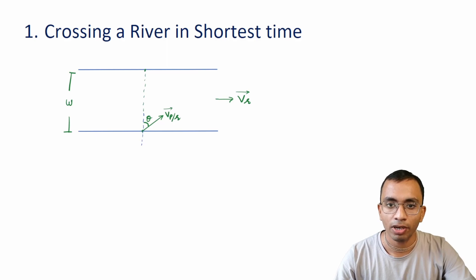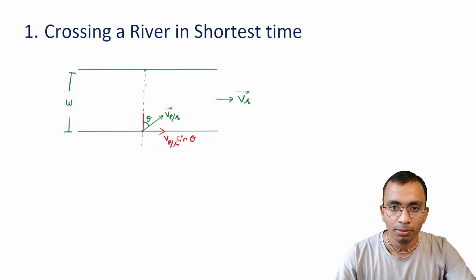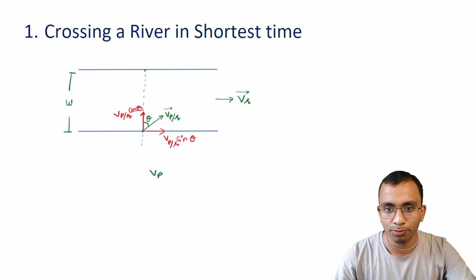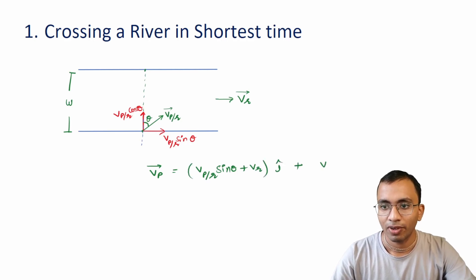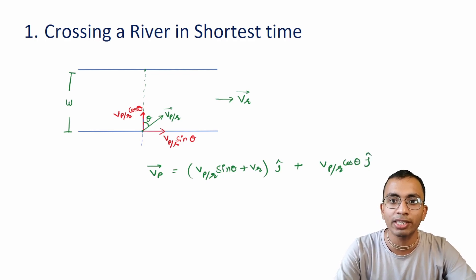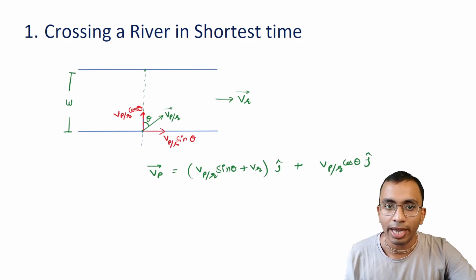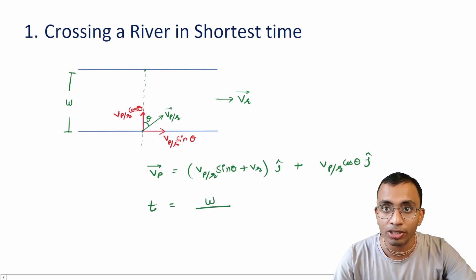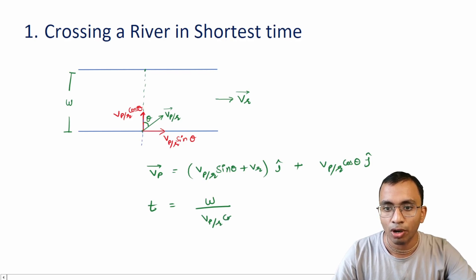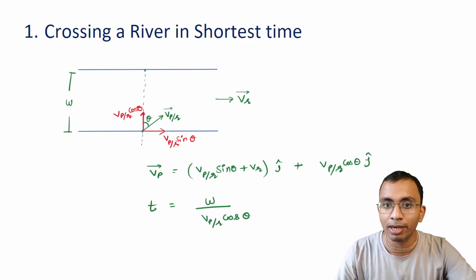Taking horizontal and vertical components of velocity of person with respect to river: the horizontal component is VPR sin θ and the vertical component is VPR cos θ. So the resultant velocity of person = (VPR sin θ + v_river) î + (VPR cos θ) ĵ. The time to cross is: t = w / (VPR cos θ).